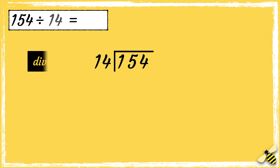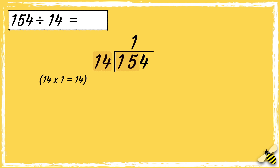The divisor goes next to the bus stop. Now we know that 14 doesn't go into 1, so we need to start by seeing how many 14s go into 15. 14 times 1 is 14, so it goes into 15 once. Now we need to find out what's left over: 15 take away 14 equals 1.